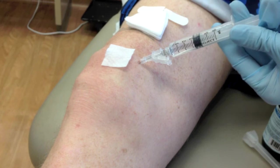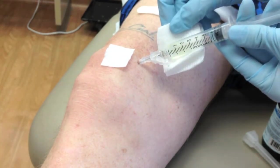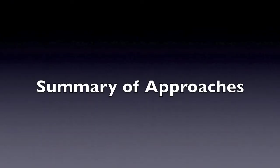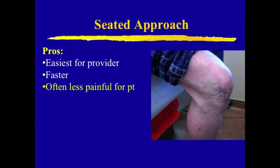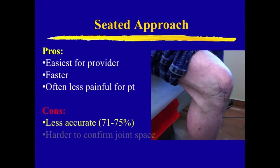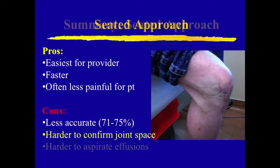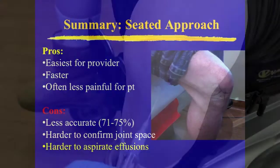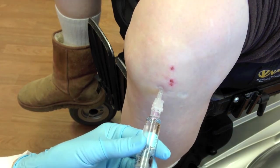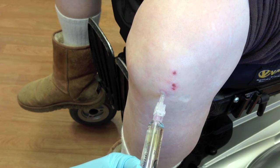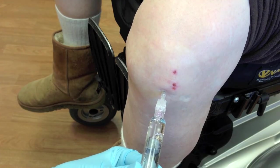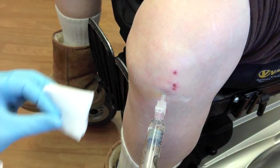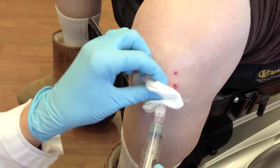For this reason, some providers prefer the supine suprapatellar approach. In summary, the seated anteromedial or lateral approach is the easiest for providers to learn, faster from less patient positioning, and often less painful for patients, but this position can be less accurate for reaching the joint space, less likely to get a synovial flashback confirmation, and less effective for aspirating an effusion. However, we do still use this approach on some patients, such as thin patients who had significant benefit from anterior injections in the past, or patients in wheelchairs who are difficult to position supine. If you are able to get a synovial flashback in the seated position, then you are certainly in the joint space, and the injection should be as effective as any other position.